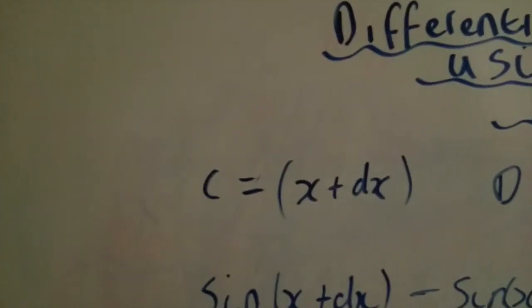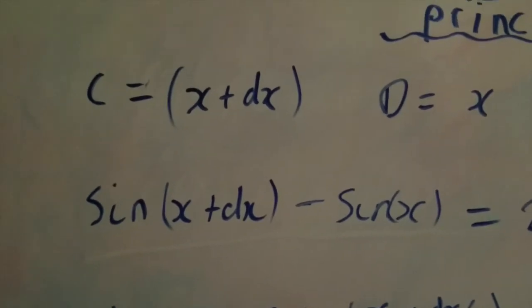Simplifying this further, using the c is equal to x plus dx and d equals x, if we substitute it into the identity, it will look slightly similar to this. So, sine x plus dx minus sine x is equal to 2 cos etc. If we simplify that further to find out what dy by dx is equal to, we'll find that it is equal to that. 2 cos x plus dx over 2 times sine dx over 2 over dx. Now, that looks really really really horrible to interpret.